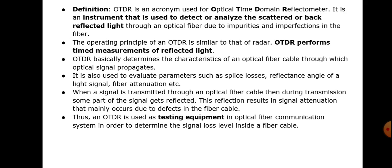The OTDR instrument is used to detect or analyze the scattered or back-reflected light through the optical fiber due to impurities and imperfections. The operating principle of OTDR is similar to radar — in radar, we utilize the reflected signal and measure the time between the sent pulse and received pulse, from which we calculate the range.